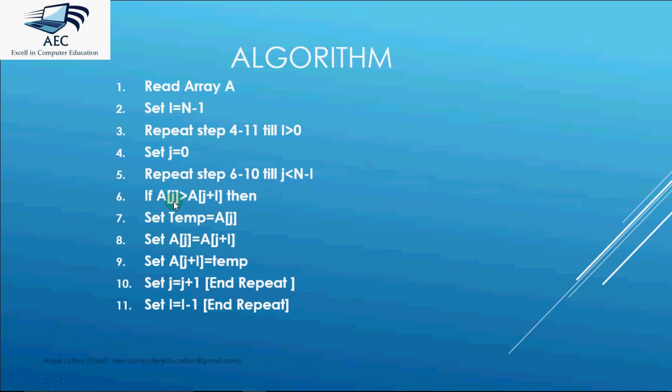So when j is 0 it compares it with a[j+i]. Let's say it's the first iteration i is 9. Condition is true. j is 0. This condition is also true. So it compares a[0] with a[9]. If it is true, swapping would be done.